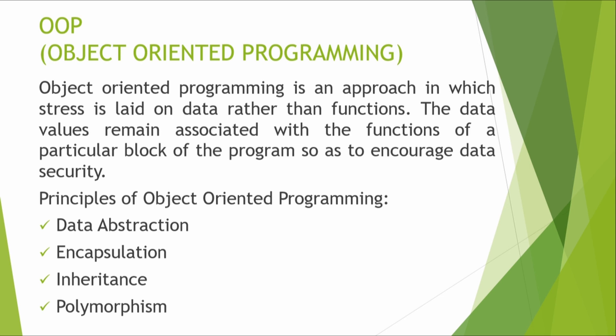For example, C and C++ are both programming languages, but C is not an object-oriented programming language since it doesn't have data abstraction, encapsulation, inheritance, and polymorphism. Whereas C++ has these features, so C++ is an object-oriented programming language — like Java and Python. Languages that do not carry these features are known as procedure-oriented programming languages, like QBasic.